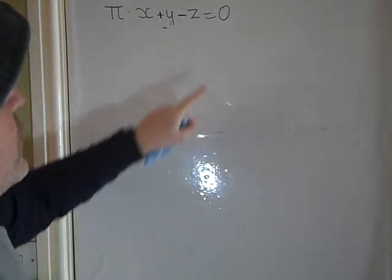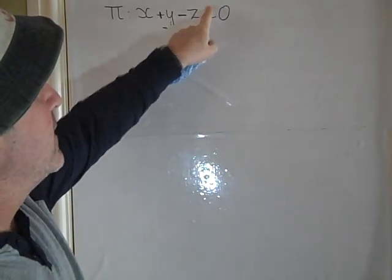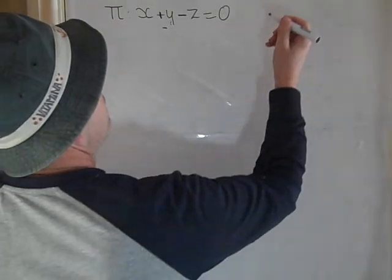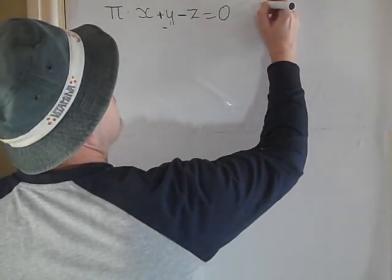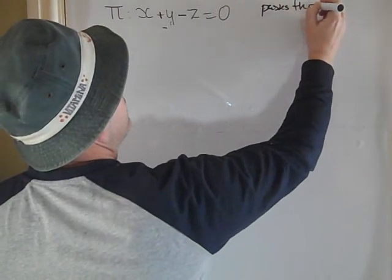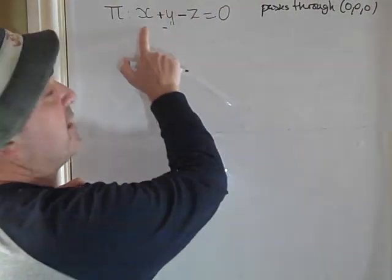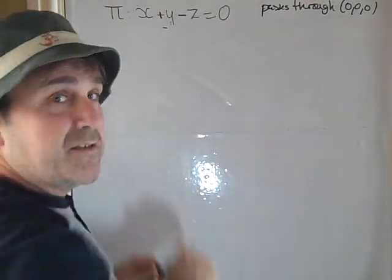So the first thing to notice is that we don't have a constant. So that means that the plane passes through the origin. So that means that passes through (0, 0, 0), since when x is 0, y is 0 and z is 0, that is always 0.